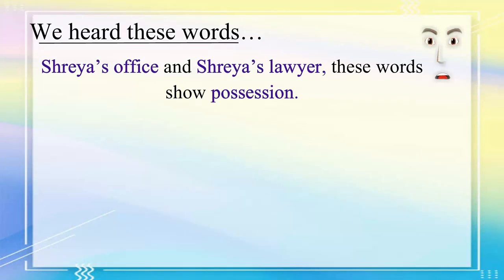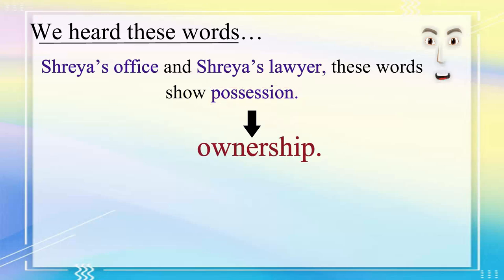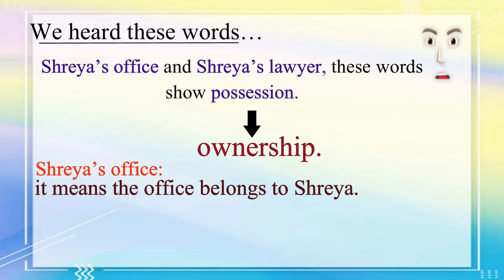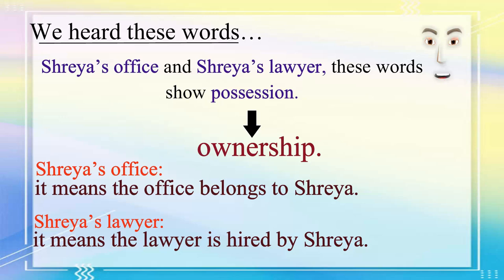In this conversation, we heard the words 'Shreya's office' and 'Shreya's lawyer.' These words show possession. Possession means ownership. 'Shreya's office' means the office belongs to Shreya. 'Shreya's lawyer' means that the lawyer is hired by Shreya.